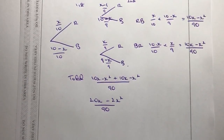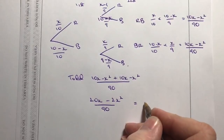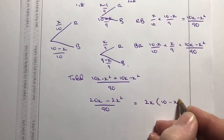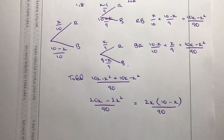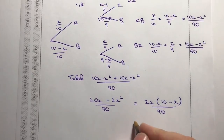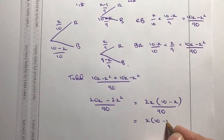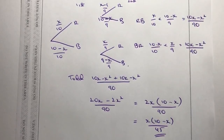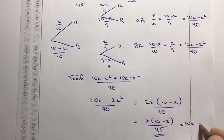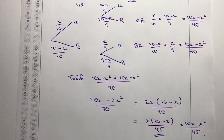You could simplify this a little bit. I suggest you factorize the numerator: 2x times (10 minus x), all over 90. Then the 2 and the 90 can be reduced, so we get x(10 minus x) over 45. If you want to expand it out, that's 10x minus x squared all divided by 45. It doesn't really matter if you leave it in its factorized form — that's perfectly fine.